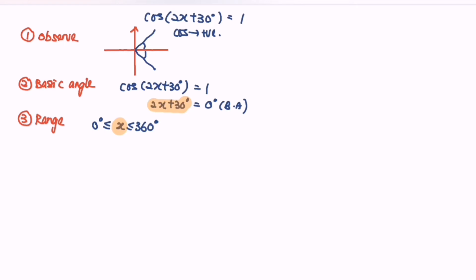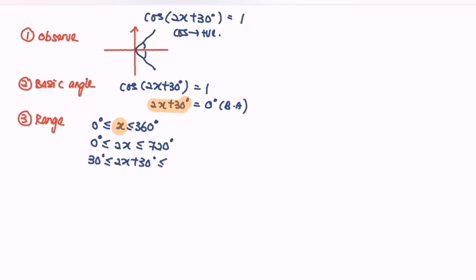To transform the range for 2x + 30°: first multiply by 2, giving 0° to 720°; then add 30°, giving 30° to 750°. So the range for 2x + 30° is from 30° to 750°.